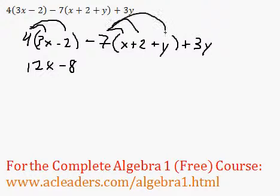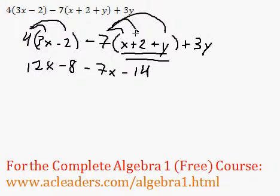Then we have the 7 multiplying all the elements within the parenthesis over here. Negative 7 times x, negative 7x. Negative 7 times 2, negative 14. Negative 7 times y, negative 7y, plus 3y.